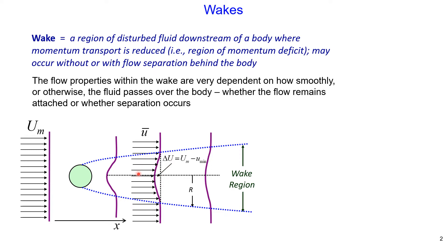This region may occur with or without flow separation behind the body. The flow properties within the wake are very dependent on how smoothly or otherwise the fluid passes over the body — whether the flow remains attached or whether the flow separates from the body. In this example I show two separation points, defined with capital S.